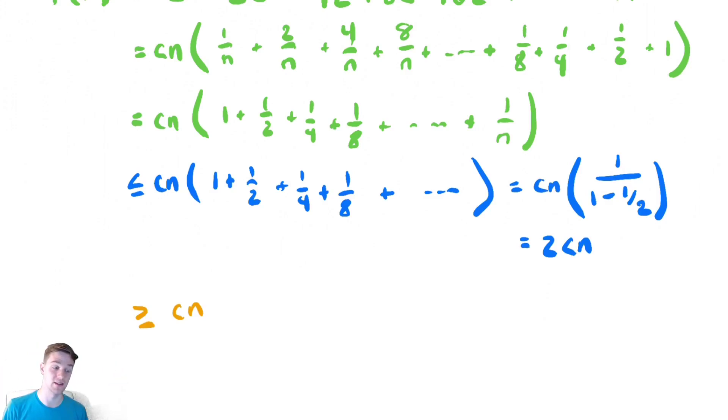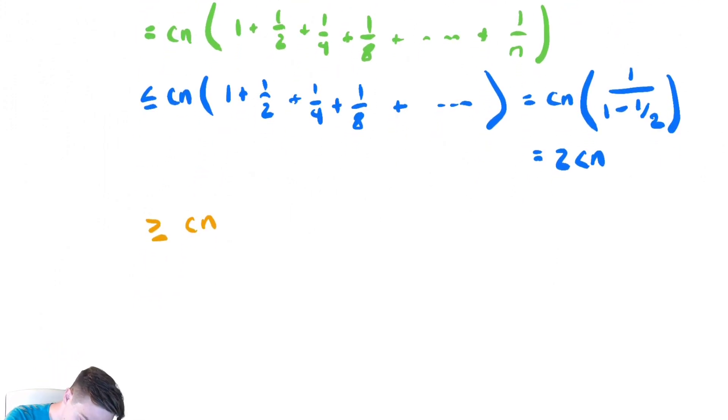So it's bounded above by 2cn and bounded below by cn. Therefore, the summation must be in theta of n. So our final conclusion, so t of n is in theta of n.